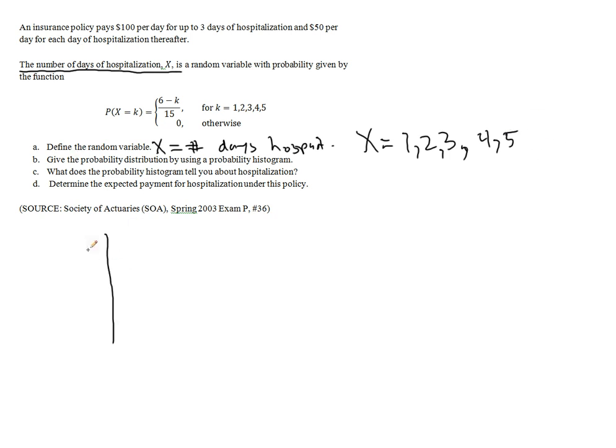So that means that K, the number of days of hospitalization, and the probability that the number of days is K is as follows. So we have 1, 2, 3, 4, or 5. If K is 1, that means the probability would be 6 minus 1 is 5 over 15. So we'll have 5/15 probability that the number of days of hospitalization will be 1. 2 days will be 6 minus 2, which is 4/15.